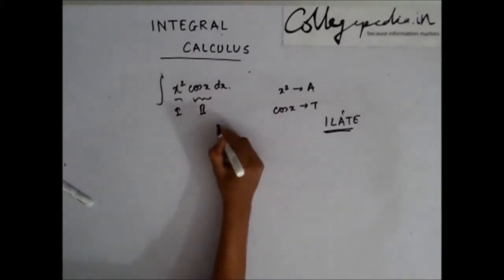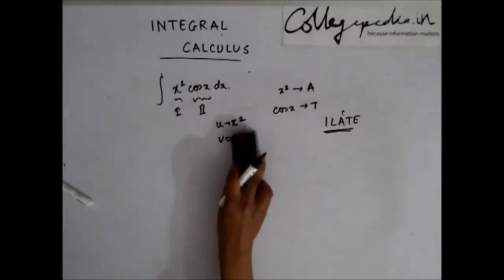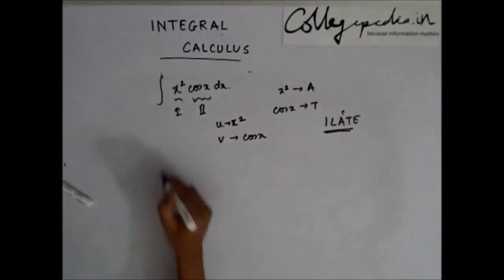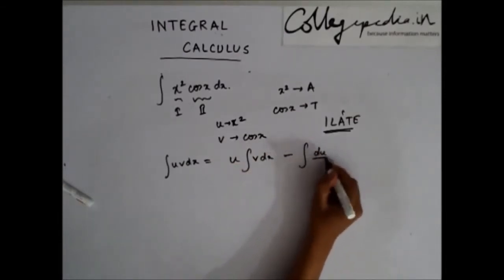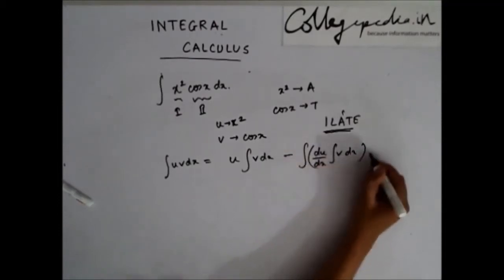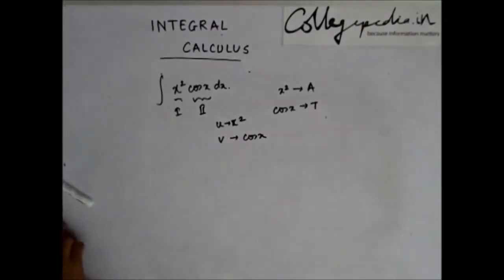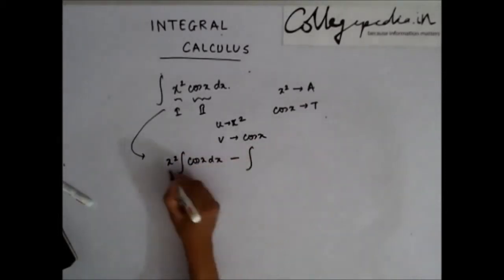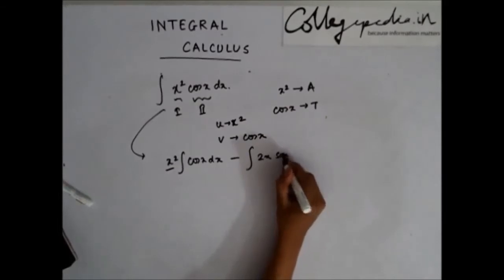We set u = x² and v = cos(x). The integration by parts formula gives: ∫u·v dx = u·∫v dx − ∫(du/dx · ∫v dx) dx. Applying this, the integral becomes x² · ∫cos(x) dx minus the integral where I differentiate x², giving 2x, and the integration of cos(x) is sin(x).